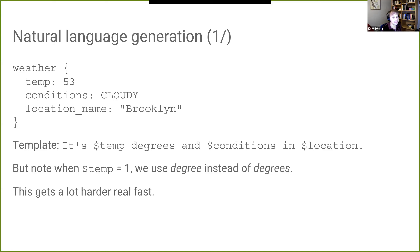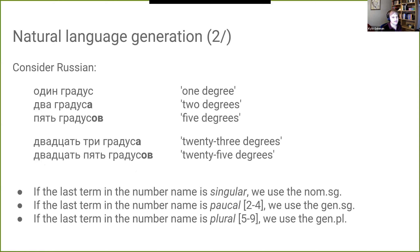When the temperature is one, we need to use the form 'degree' instead of 'degrees' — we need number agreement. But this gets a lot harder fast. The example I turn to is Russian. In Russian, we have different forms of the word meaning 'degree' (градус) depending on the preceding number: один градус, два градуса, пять градусов. The rules look at the last term in the number name, not the absolute magnitude. If the last term is singular, we use the nominative singular; if paucal, the genitive singular; if plural (five to nine or bigger), we use the genitive plural.